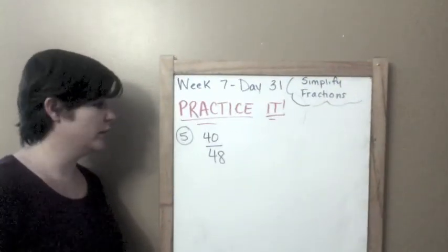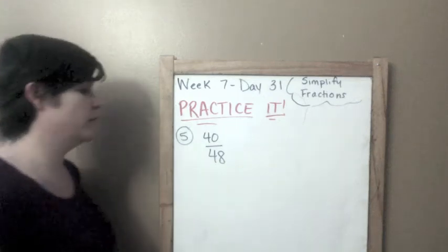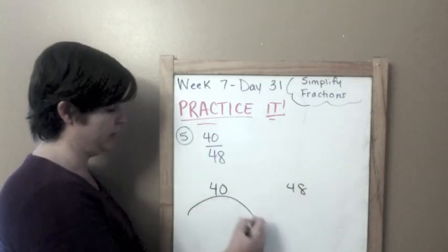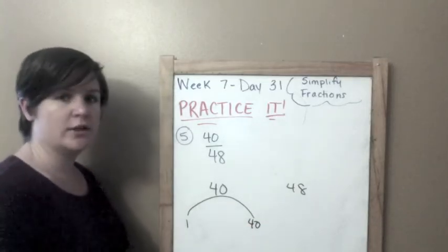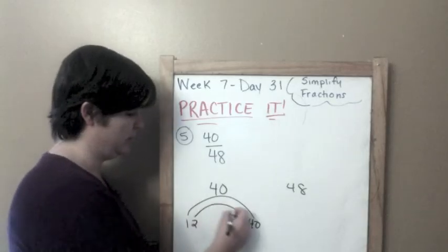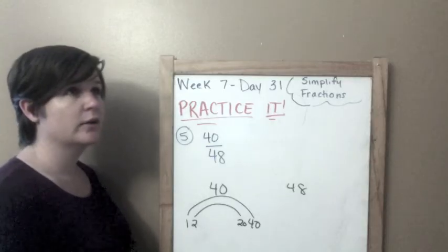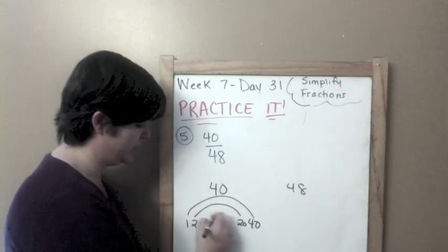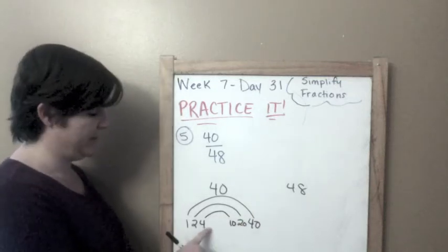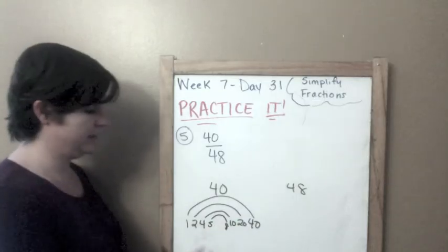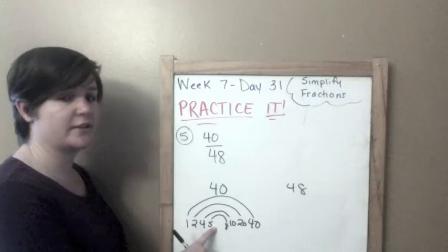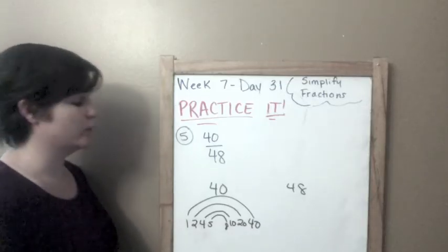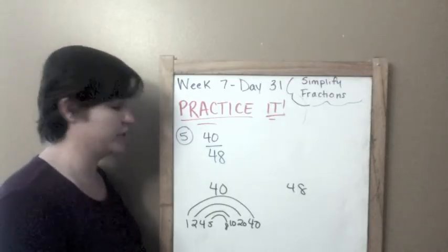One more. Final one. We're on number 5. We've got 40 over 48. Let's find our greatest common factors by finding all the factors of these numbers. For 40, we have 1 and 40, 2 times 20, 4 times 10, 5 times 8. Those are our factors of 40. Let's try 48. We have 1 and 48, 2 and 24, 3 and 16, 4 times 12, 6 and 8. Those are our factors.